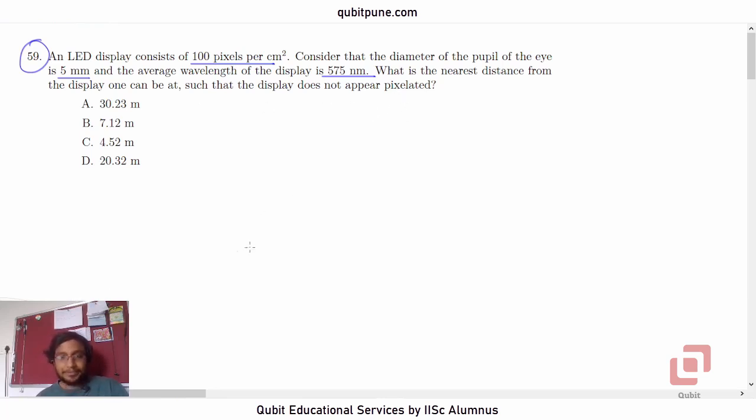Suppose this is the display, and we wish to find the nearest distance from the display such that the display does not appear pixelated. Suppose that distance is small d. So here will be our human eye.